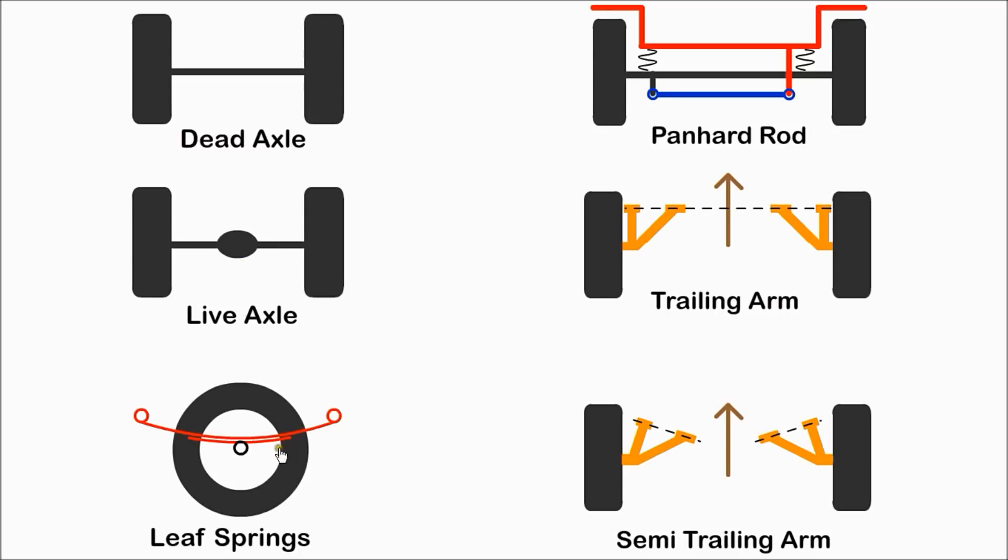Leaf springs are made from layers of spring steel and are generally used on trucks. A panhard rod is allowed to pivot at both ends. One end is attached to the car structure and the other to the axle. As the axle moves up and down, the panhard rod prevents lateral movement.